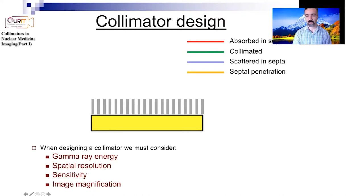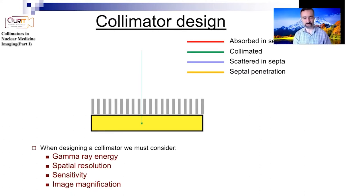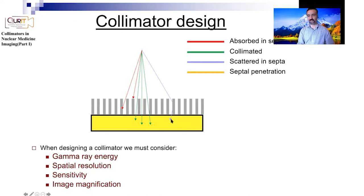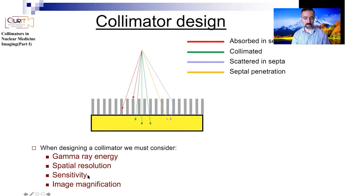There are four kinds of events to consider. First, an event that has been properly collimated and successfully detected. Even at angles somewhat different from 90 degrees, photons can still pass through — and the length of the septa (how tall it is) changes the acceptance angle and therefore the sensitivity. Some events are absorbed in the septa. It is also possible for a photon to scatter and be detected — an undesirable event that results in blurring — and in a small subset of events photons literally pass through the septa.